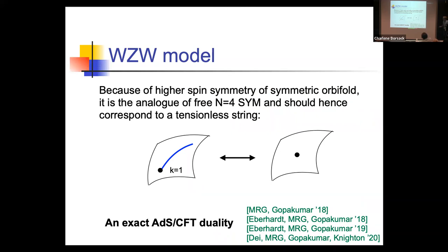The observation that made this really work was the realization that the symmetric orbifold theory has a gigantic higher spin symmetry — many conserved currents, easily seen from the symmetric orbifold perspective. You symmetrize all chiral fields, generating lots of single-particle chiral fields that form a W-infinity algebra in the dual CFT. These are analogs of conserved currents of free super Yang-Mills, meaning the bulk theory has many massless higher spin fields, corresponding to the tensionless point.